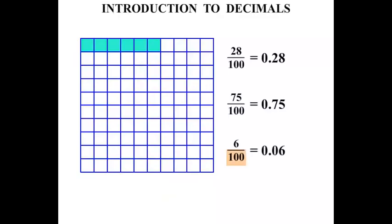So if it's over one hundred, then we expect to see two decimal places. Two digits after that decimal point.